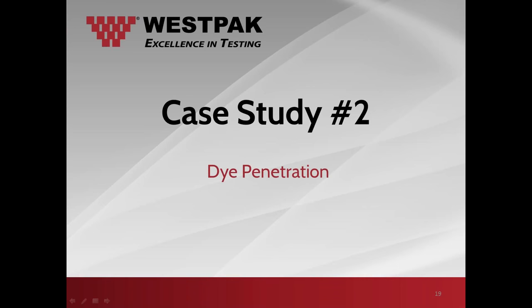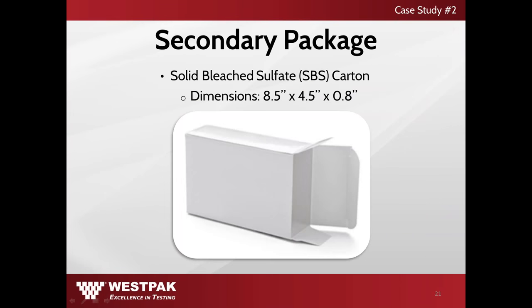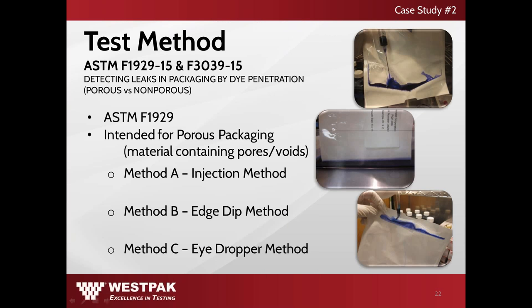We'll now be covering our second case study: dye penetration testing. In this case study, our product will be a glass file packaged in a thermoform tray with a Tyvek lid stock. The dimensions of this primary package are eight inches by four inches by half an inch. The thermoform tray is packed in an SBS carton, also known as its secondary package, with dimensions of eight and a half inches by four and a half inches by 0.8 inches. The two test methods we will cover for detecting leaks by dye penetration follow ASTM standard F1929 and F3039, both revision 2015.